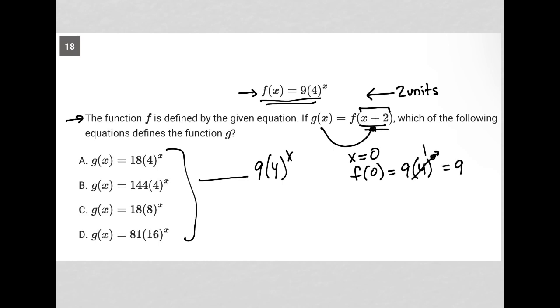Now, g(0) should equal f(0+2), which is the same as f(2). And f(2) equals 9 times 4 squared, which is 9 times 16.